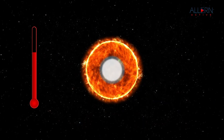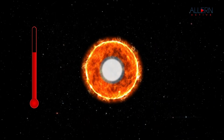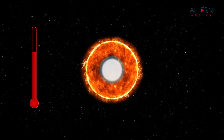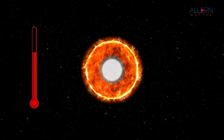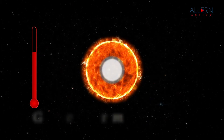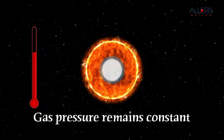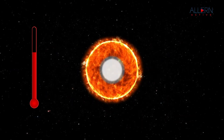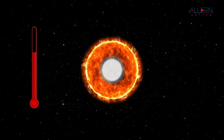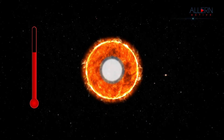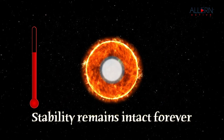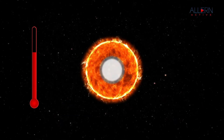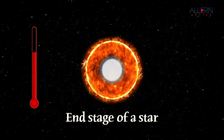When the density becomes very high, some new types of pressure are generated which do not depend on the temperature of the gas. In such a case, the gas pressure remains constant even after the energy generation stops completely and the temperature of the gas goes on decreasing. The stability of the star can remain intact forever, and this can be considered the end stage of a star.